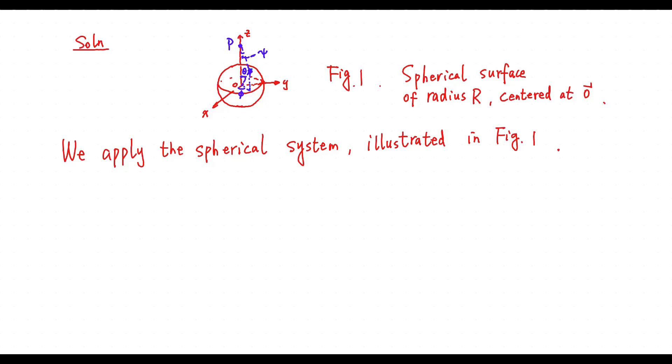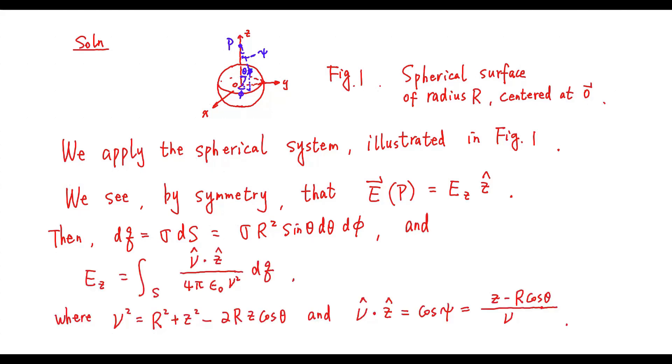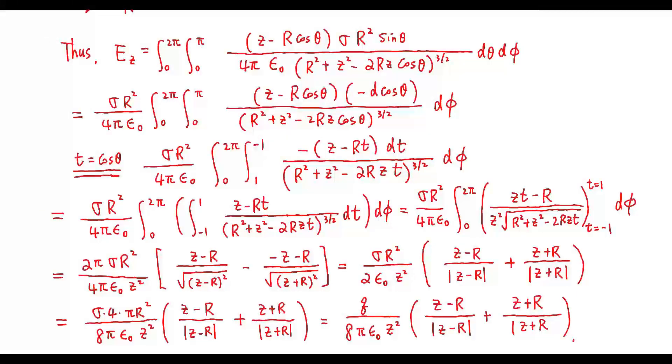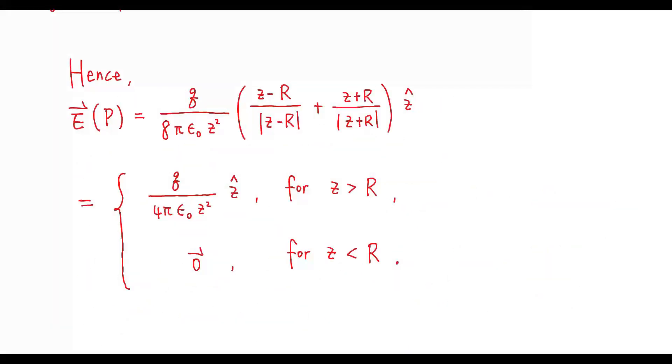Solution: We apply the spherical system illustrated in figure 1. We see that the direction of the electrical field is in the z direction. Then d2 is given by this one, and ez is given by this one. So we have this one. Thus, we conclude this result.